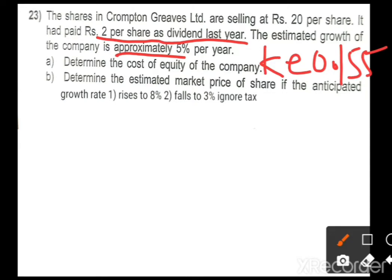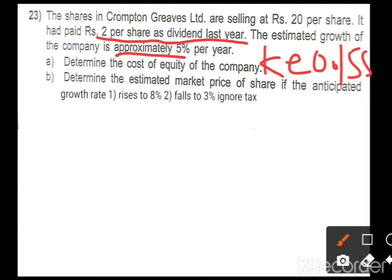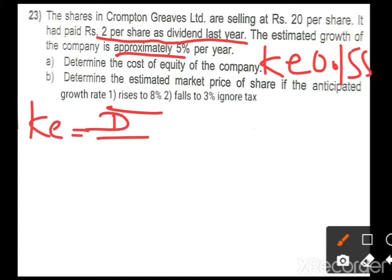Now for the second case: determine the estimated market price of the share. The formula is Ke = D/P + g, rearranged to P = D/(Ke − g). We know Ke (0.155) and the dividend, but not P. Case (b)(i): growth rate raises to 8 percent. First, find the new dividend.